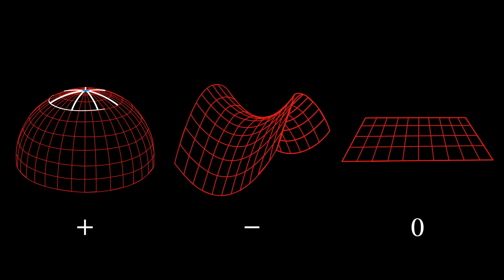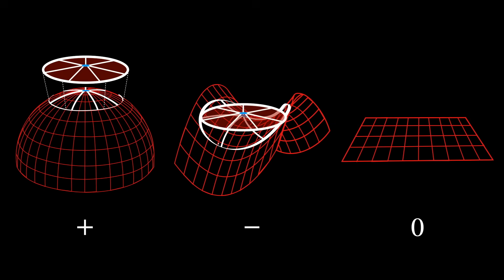if you draw that circle around you, the area will be less than expected. In a negatively curved space, the area will be larger than expected.